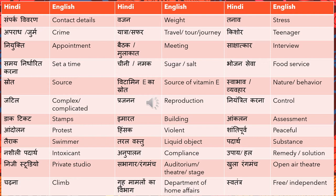'Kishor' means teenager. 'Niyukti' means appointment, 'bethak' or 'mulaqat' means meeting, and 'saakshatkar' means interview. These three words are subtly different — you cannot translate 'niyukti' as meeting, and you cannot translate 'mulaqat' as interview. Make sure you use them correctly. 'Nirdhaarit karna' means to set a time. 'Chini ya namak' means sugar or salt. 'Srot' means source — for example, 'aloo carbohydrates ka ek mukhya srot hai' means potato is a good source of carbohydrates.